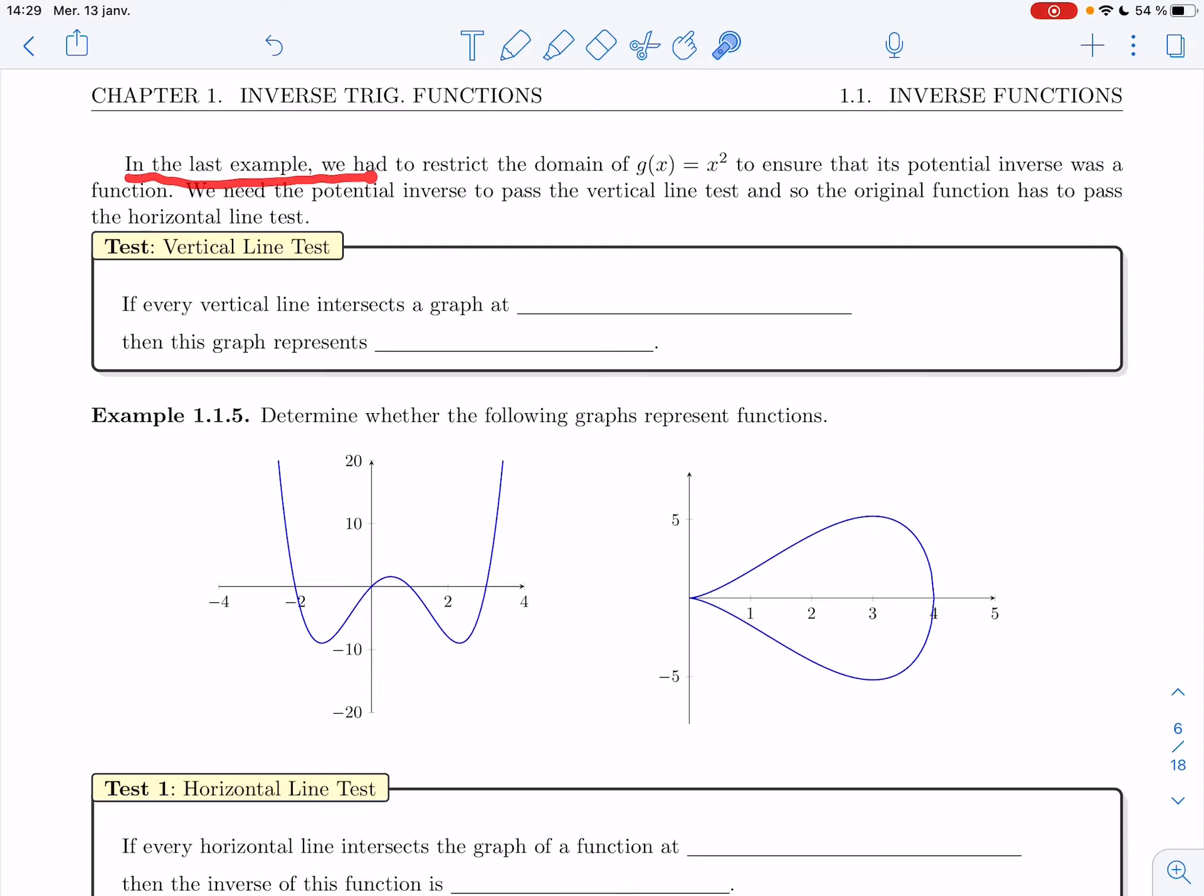In the last example, we had to restrict the domain of g of x equals x squared to ensure that its potential inverse was indeed a function. We need the potential inverse to be a function, so we need it to pass the vertical line test. And if you translate it back to the original function, the one you're trying to invert, it has to pass the horizontal line test.